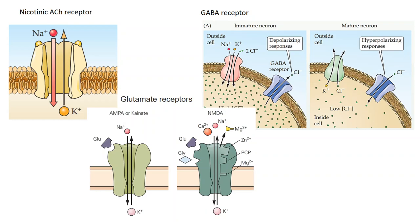Coming to the GABA receptors, which are also ionotropic receptors — although there are some receptors of GABA which are metabotropic as well. Here we are discussing the ionotropic receptors of GABA. GABA means gamma-aminobutyric acid. It is generally regarded as an inhibitory neurotransmitter, but the effect of GABA on neurons is different at different developmental stages. When the brain is relatively immature and starts to develop, GABA has an excitatory effect on the postsynaptic cell.